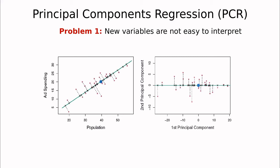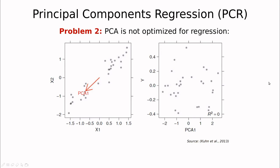This idea of PCR is super useful in unsupervised training but has a couple of problems. The first problem is that the new variables are not easy to interpret. Population and advertising spending is something you can explain to a client, but it's really hard to explain principal components which are linear combinations of the parameters.